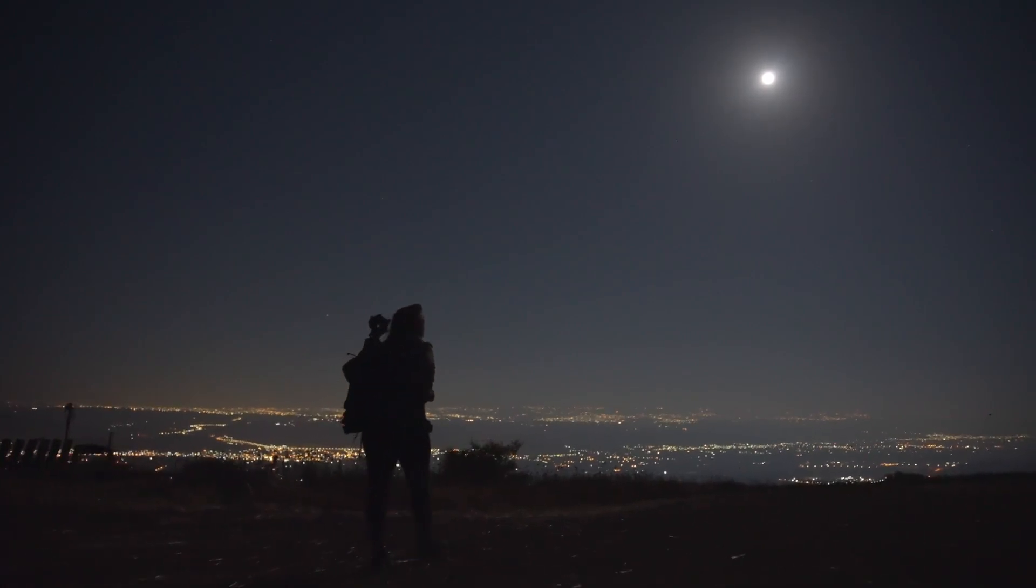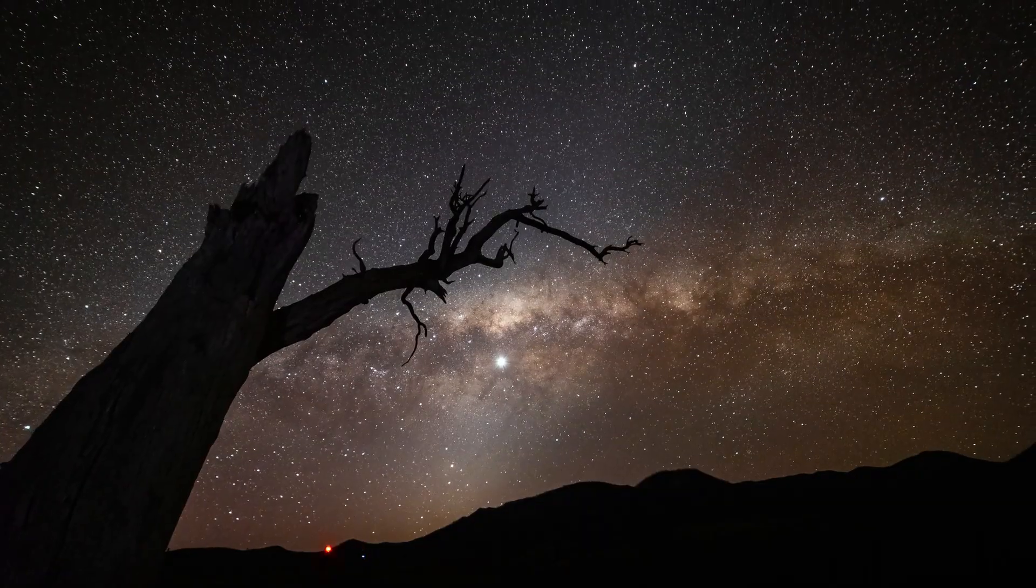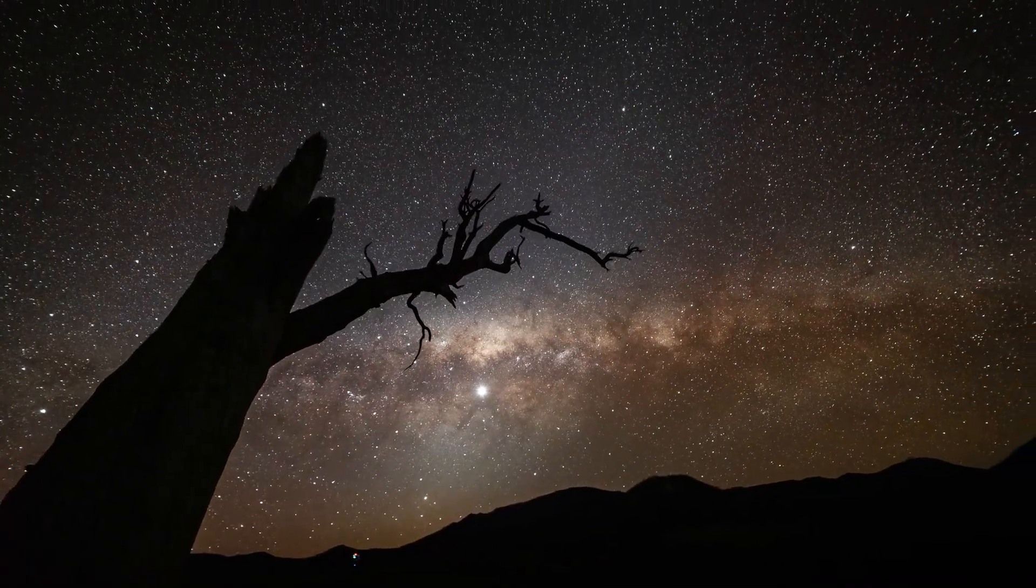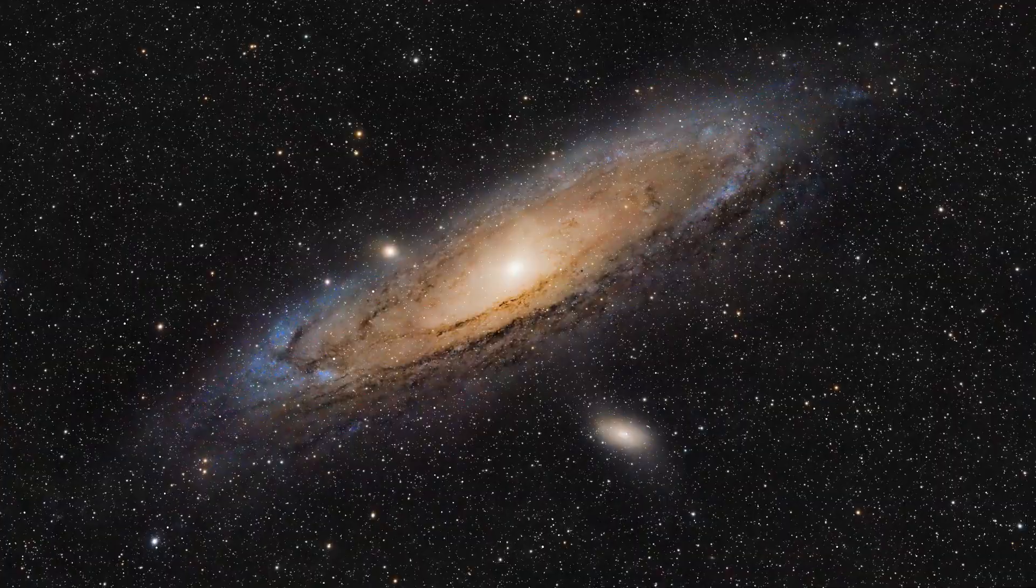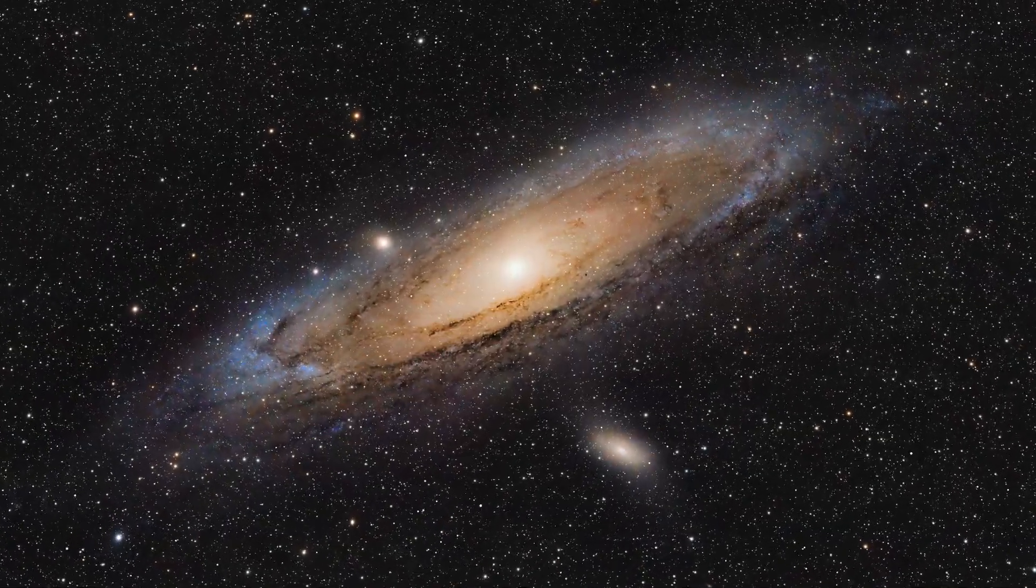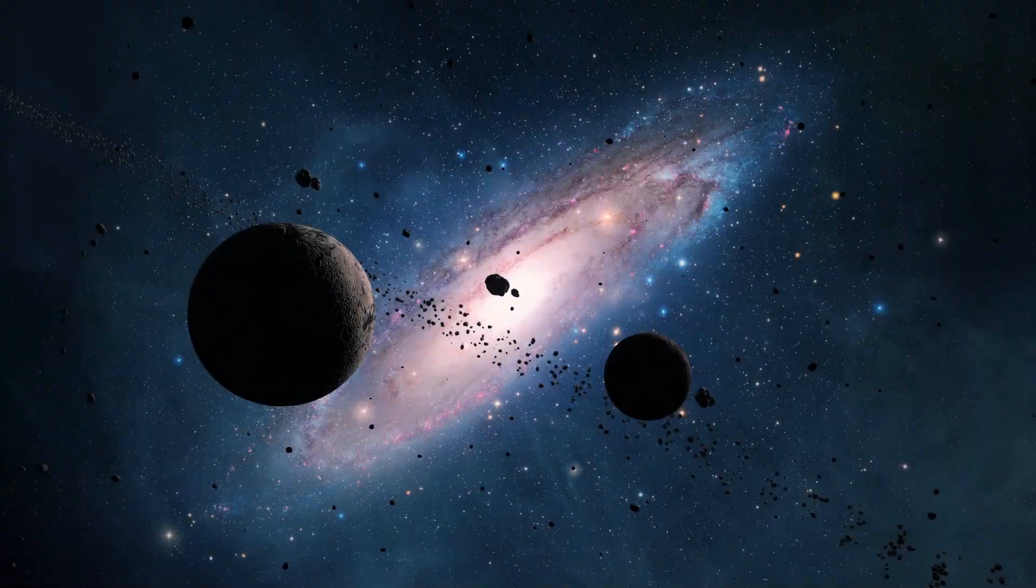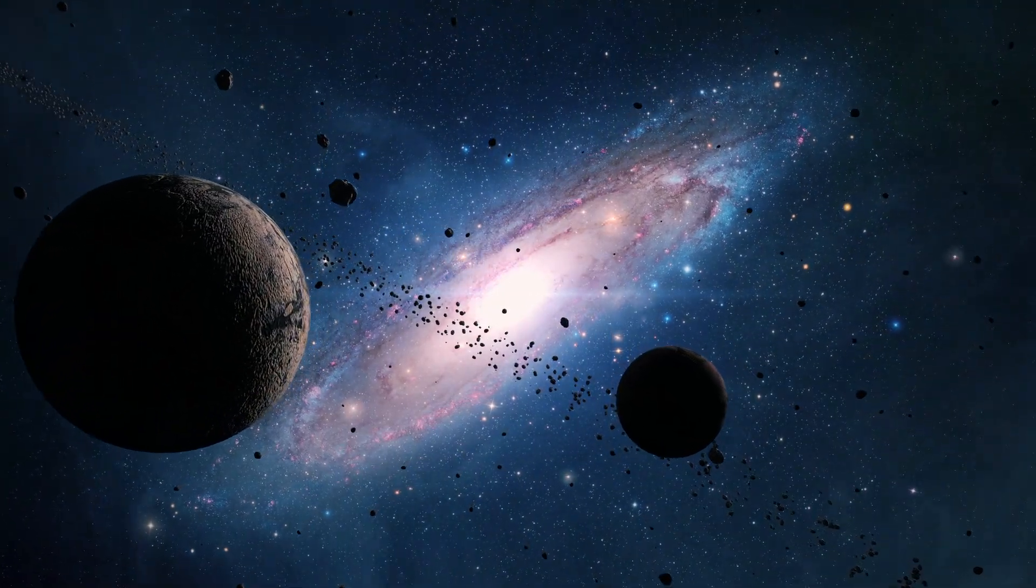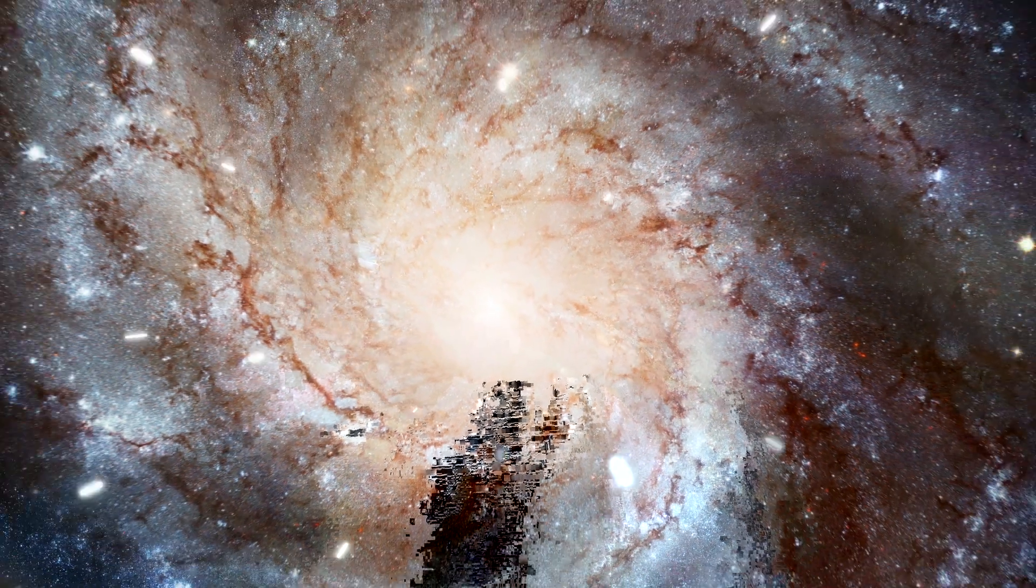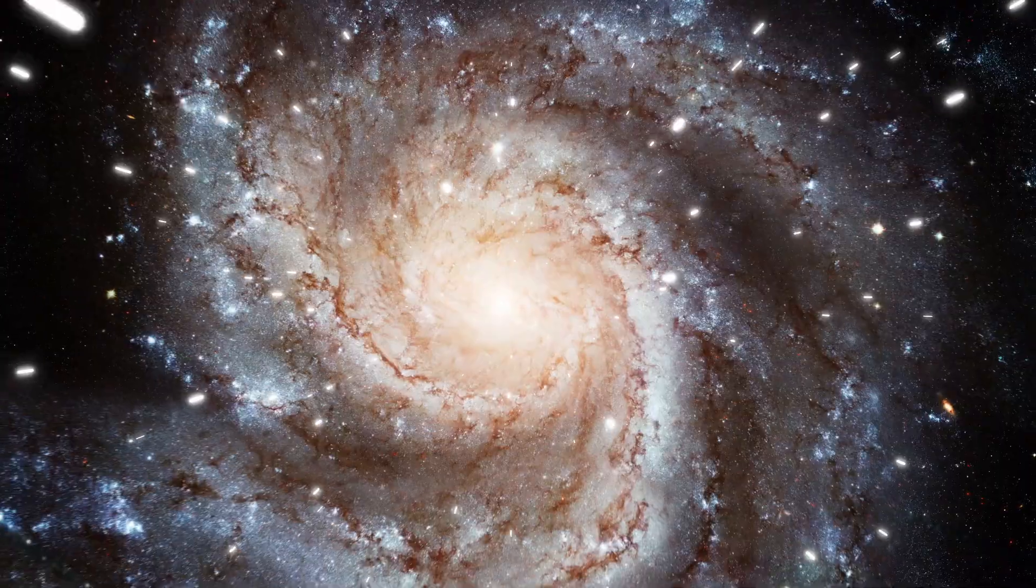If you look up on a clear, dark night in autumn, you might be able to spot a faint, blurry smudge in the constellation Andromeda. That little haze is actually the Andromeda galaxy, the nearest major galaxy to our Milky Way. It's hard to believe, but this faint, hazy spot is somewhat of an island universe of its own. A swirling spiral galaxy with about one trillion stars, possibly twice the number in our Milky Way.